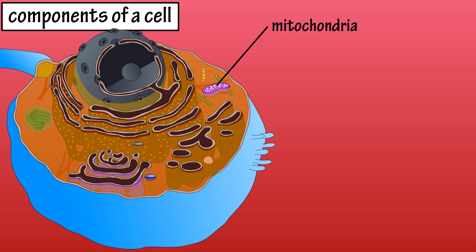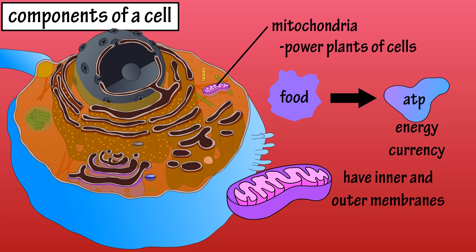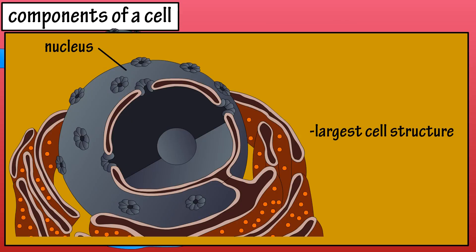Mitochondria, which are found in the cytoplasm, are the power plants of cells, as they can take energy from food molecules and use it to build ATP molecules. ATP is the energy currency of cells needed to do cellular work. Mitochondria have an inner and outer membrane and vary in numbers depending on the amount of work a cell does. For instance, liver cells contain a thousand or more mitochondria, and frequent aerobic exercise increases the number of mitochondria in skeletal muscle cells.